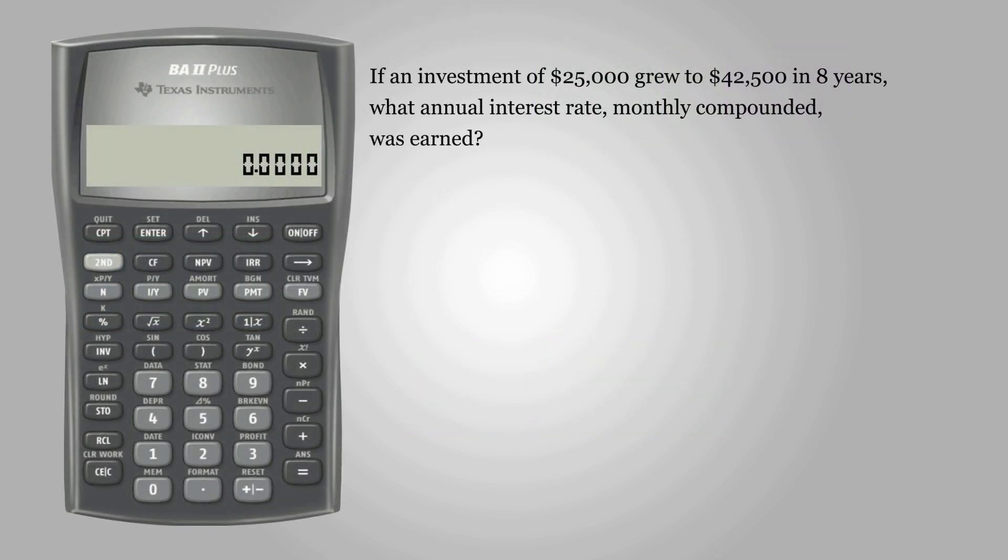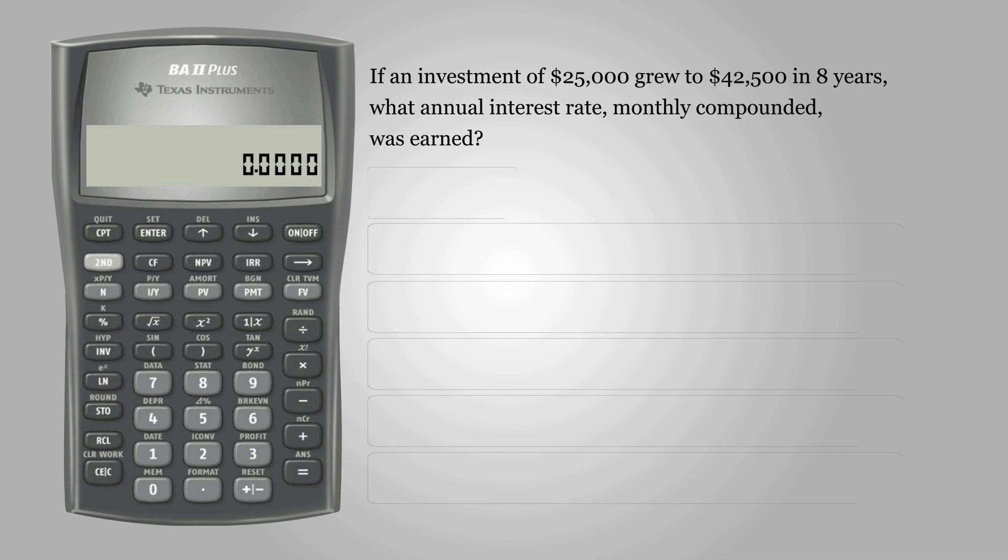The question asks, if an investment of $25,000 grew to $42,500 in 8 years, what annual interest rate, monthly compounded, was earned?